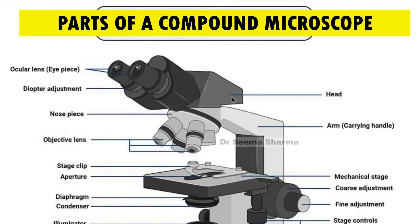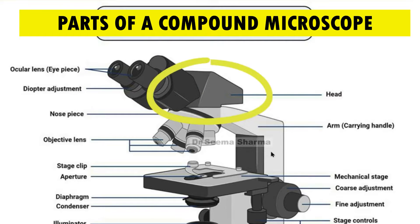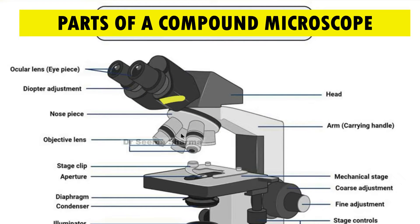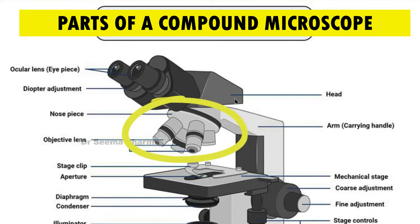After eyepiece, there is head. There is also an arm, which is used as a carrying handle.